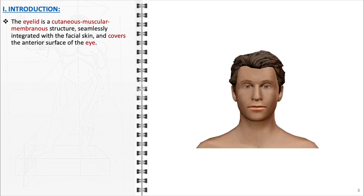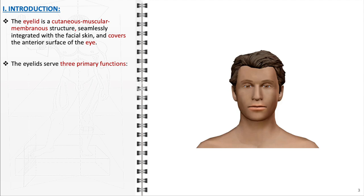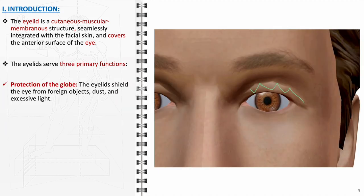The eyelid is a sophisticated cutaneous muscular membranous structure, elegantly designed and seamlessly integrated with the facial skin. Its primary role is to cover and protect the anterior surface of the eye, but it accomplishes much more than just acting as a physical barrier. The eyelids act as a protective barrier, reflexively closing in response to potential threats such as foreign objects or sudden bright lights, thereby safeguarding the delicate structures of the eye from damage.